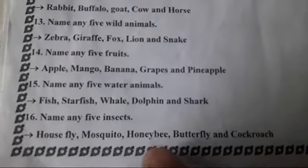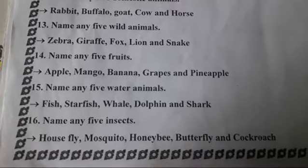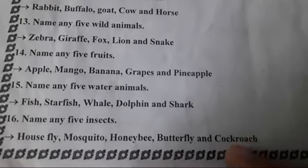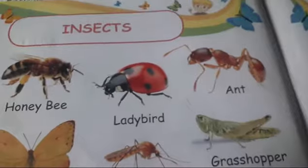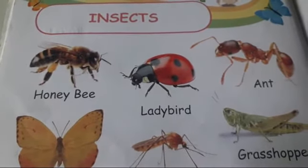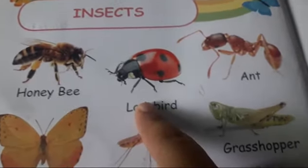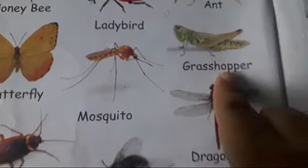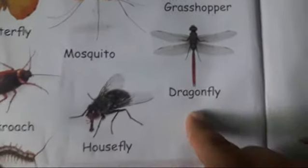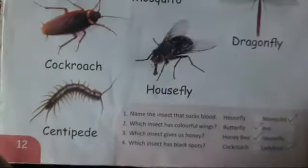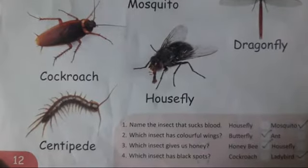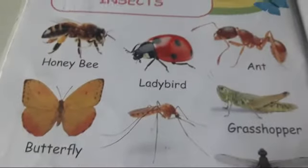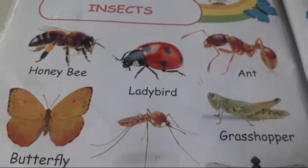Name any five insects — housefly, mosquito, honeybee, butterfly and cockroach. Look at here children, insects: honeybee, ladybird, ant, butterfly, mosquito, grasshopper, dragonfly, housefly, cockroach and centipede. These all are insects but you speak any five insects name.